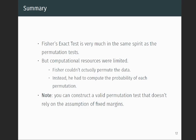So he couldn't actually permute the data. So instead, what he did is that he set up the experiment in a way that he could exactly compute the probability of each permutation. And this is why we call it Fisher's exact test. It's exact in the sense that we can compute the probabilities exactly under the assumptions of fixed margins. And I'll conclude by noting that you can actually construct a valid permutation test that doesn't rely on that assumption. And so in some sense, the permutation tests are more general.